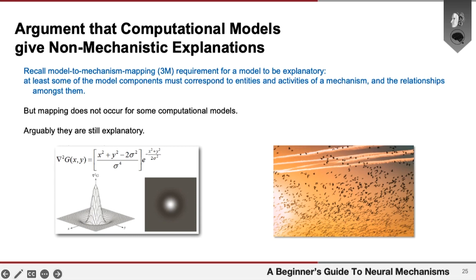And this debate has turned on examples like computational models, where what I and others have been arguing is that you have examples of computational models which do not satisfy the criteria for being descriptions of mechanisms. So if you think back to that 3M mapping criterion, we're saying that that condition doesn't hold.